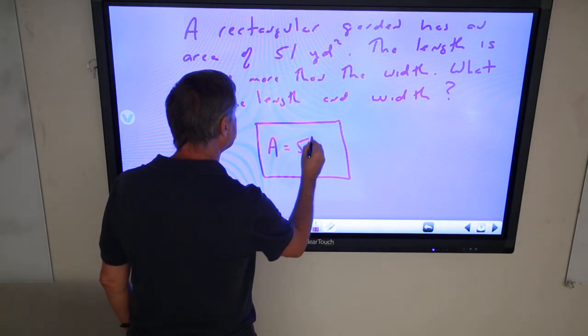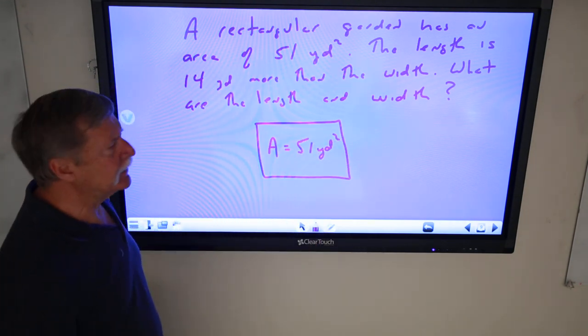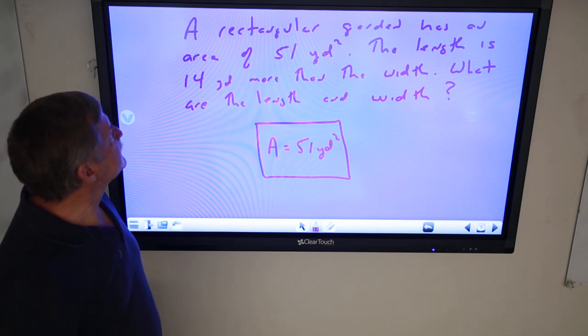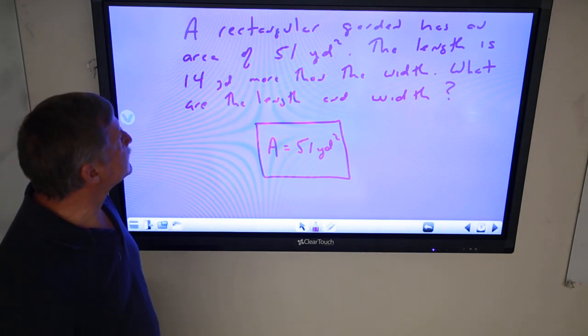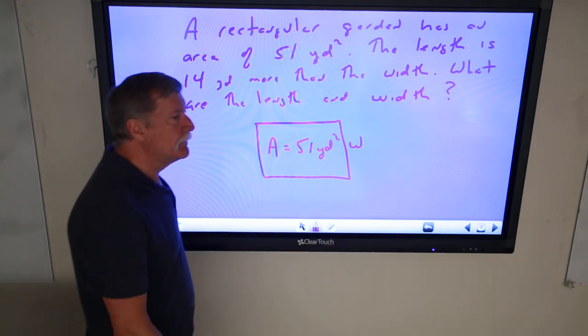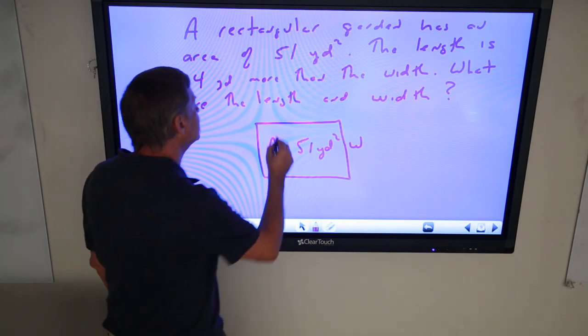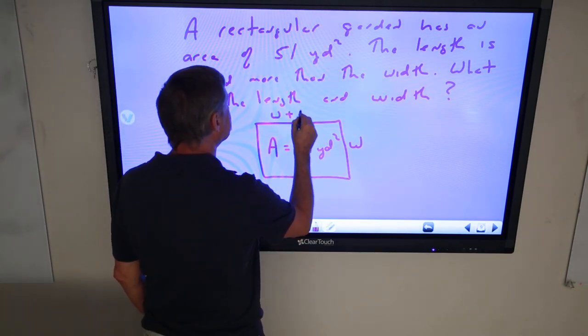And it has an area of 51 square yards. So now the area equals 51 square yards. It's not length or width, area. And it says the length is 14 yards more than the width. Well, if I let the width be W, then the length is 14 more than whatever W is. So the length is W plus 14.